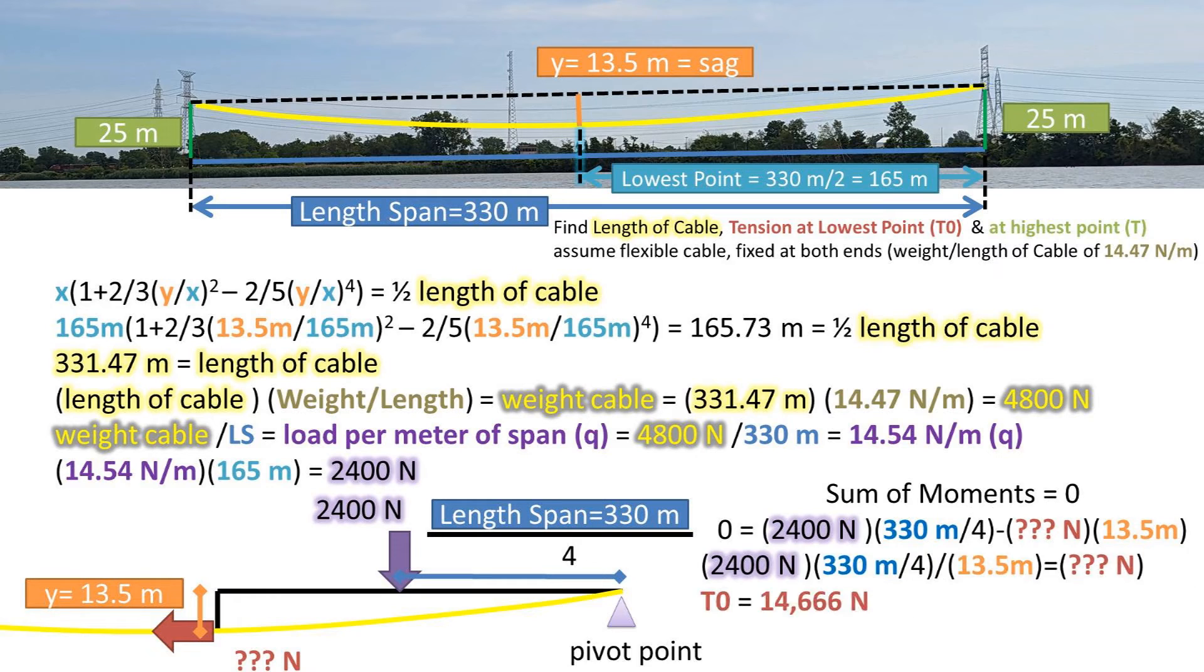So we get this equation. Rearranging this to get what we were solving for, tension force at the lowest point or zero point, we get 14,660 newtons of force at the lowest point.